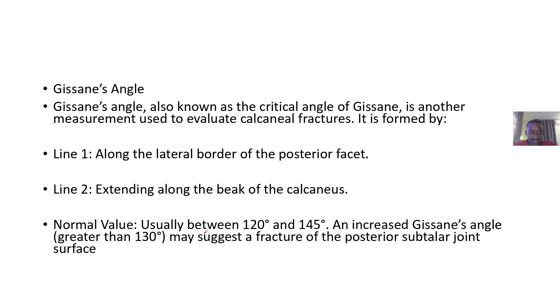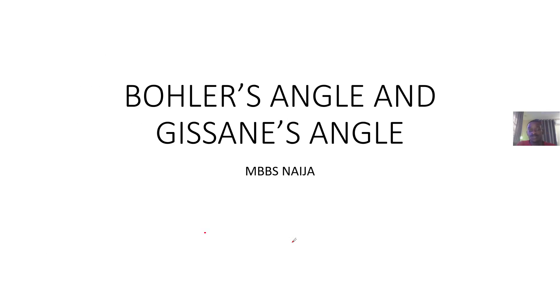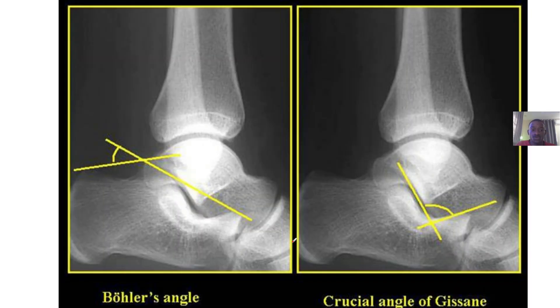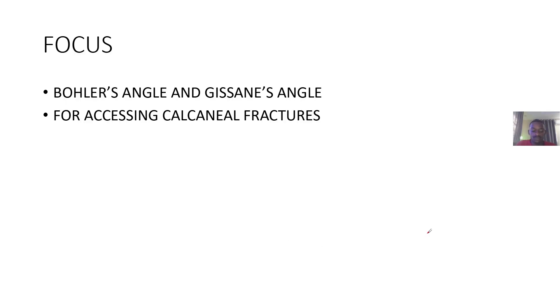The normal value for Gissane's angle is between 120 and 145 degrees. An increase in the Gissane's angle greater than 130 degrees suggests a fracture of the posterior subtalar joint. So those are the two angles used when evaluating calcaneal fractures.